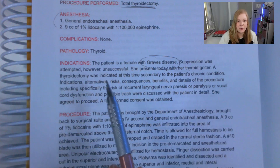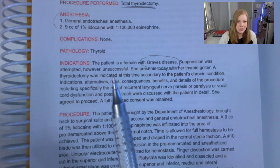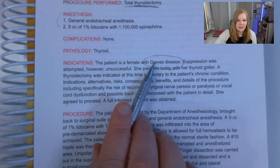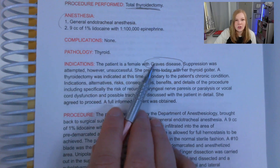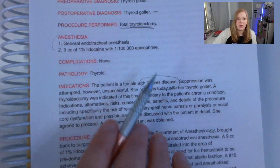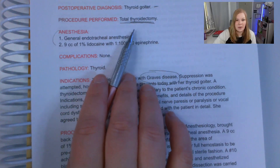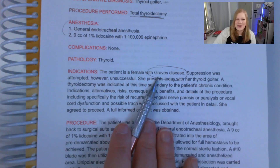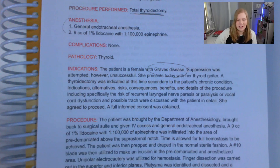Suppression was attempted, however it was unsuccessful, so she presents today with her thyroid goiter and a thyroidectomy was indicated, secondary to the patient's chronic condition. We want to make sure we put Graves' disease on there too, because there may be something in the patient's insurance coverage that requires not just the goiter but also Graves' disease on the claim in order for this thyroidectomy to be paid. We want to abstract all pertinent diagnoses to paint that medical picture.